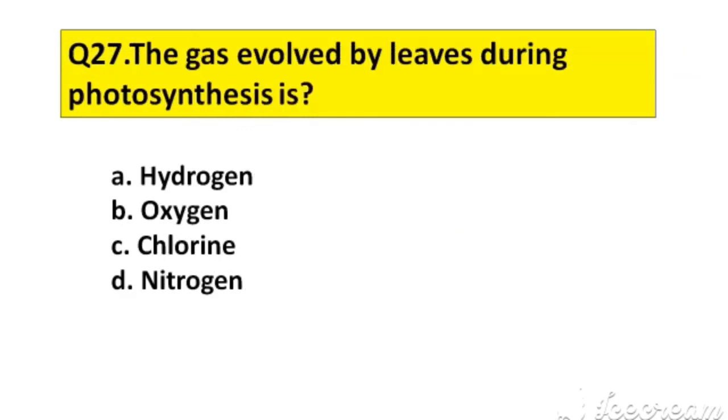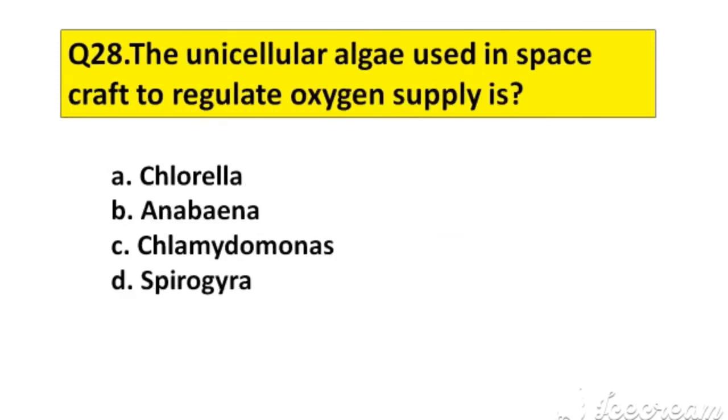Question number 27. The gas evolved by leaves during photosynthesis is: A. Hydrogen, B. Oxygen, C. Chlorine, D. Nitrogen. The right answer is option B, Oxygen.